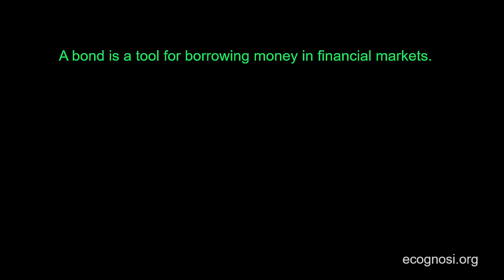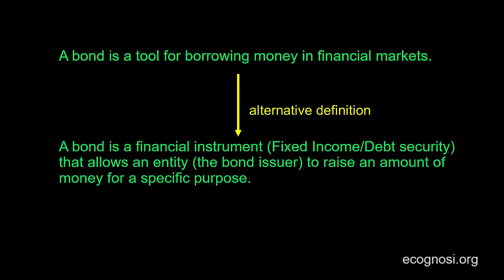In the first video on fixed income securities, we defined a bond as a tool for borrowing money in financial markets. There I promised that as we move on we will make things more concrete, and we will start doing that with an alternative bond definition that will give us a bit more context. A bond is a financial instrument — specifically, we say that it is a fixed income or debt security, and bonds are the most common type of fixed income or debt securities.